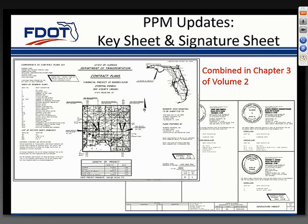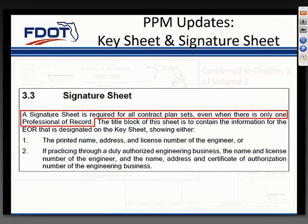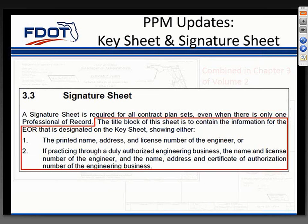The signature sheet requirements had a few minor changes. Where there is only one professional of record for a plan set, we had previously allowed the key sheet to be digitally signed and sealed—this is no longer the case. We updated the language to state that a signature sheet is required for all contract plan sets, even when there is only one professional of record. This was done for consistency and to make sure we included the proper notes required by the board. We also clarified what to place in the title block of the signature sheet. The name that appears in the title block needs to be the EOR designated on the key sheet.